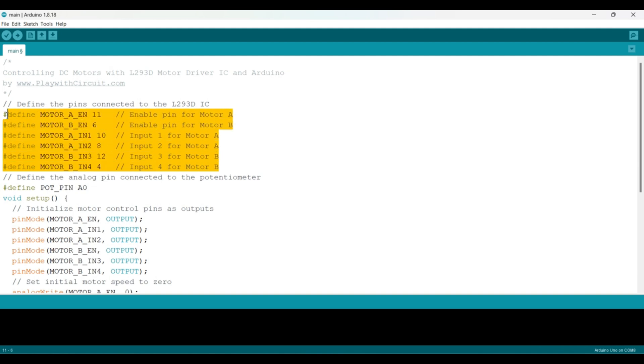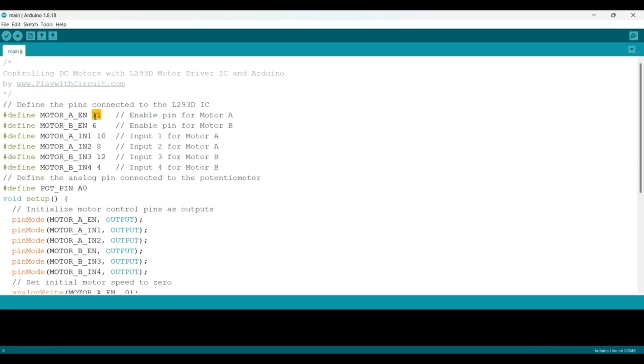Firstly we have defined pins which are connected to IC to the Arduino. Enable pin of IC is connected to pin 11 of Arduino and another enable pin of IC is connected to pin 6 of Arduino.